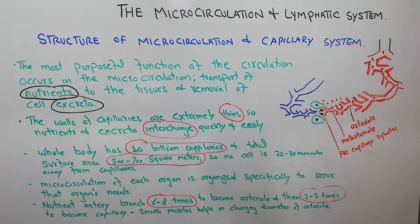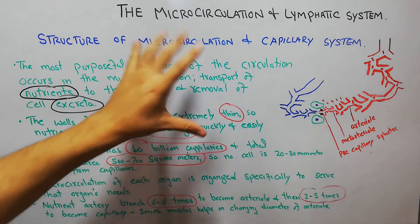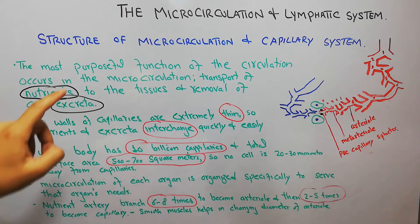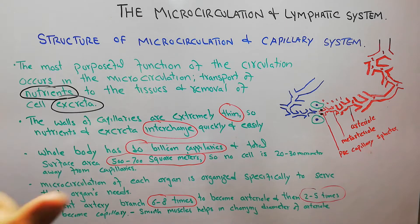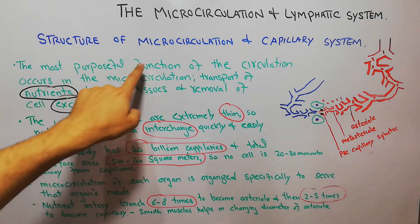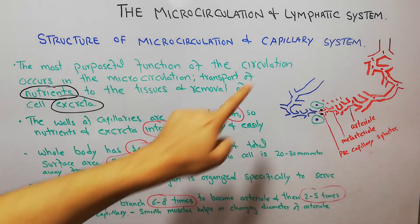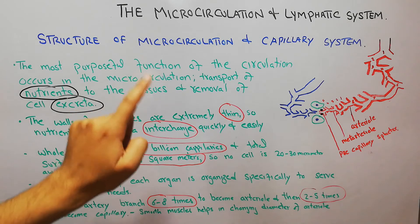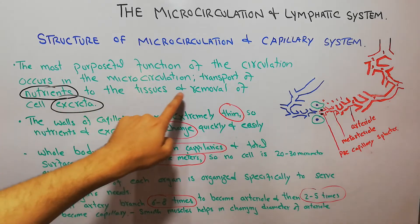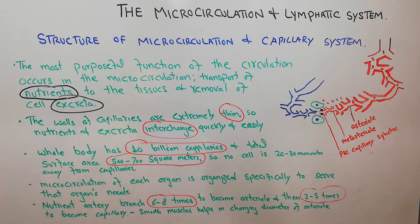What is microcirculation? Microcirculation is the circulation at the level of the capillaries — the circulation of blood at the level of capillaries. It is important to discuss because the most purposeful function of circulation occurs in the microcirculation, and that is basically the transport of nutrients to the tissues and removal of cellular excreta.